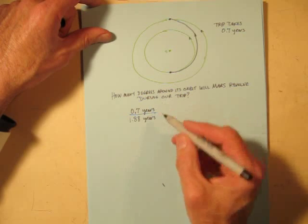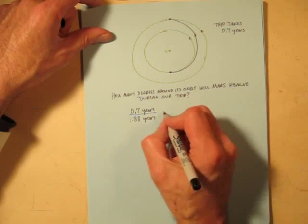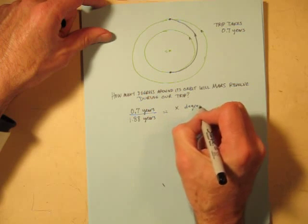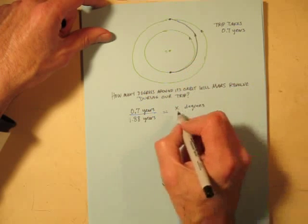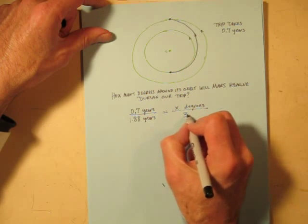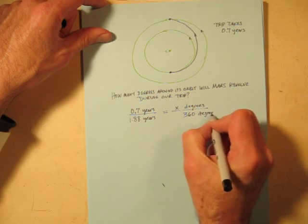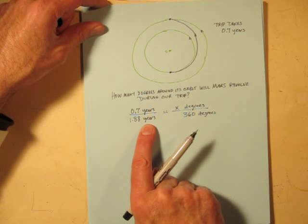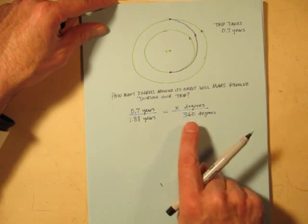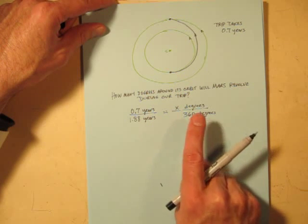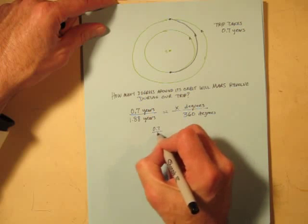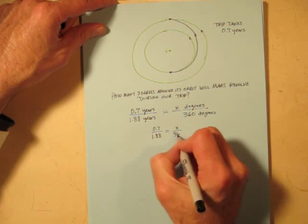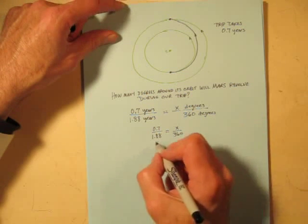One Mars revolution takes 1.88 years. During this much of a Martian year, Mars will travel x degrees around its orbit. Remember degrees from measuring angles with a protractor? Out of 360 degrees for a complete circle. So during this much of a Martian year, which is less than one Martian year, Mars revolves this much of a complete circle. It's a proportion. 0.7 divided by 1.88 equals x over 360. And you can do that thing you do with proportions.